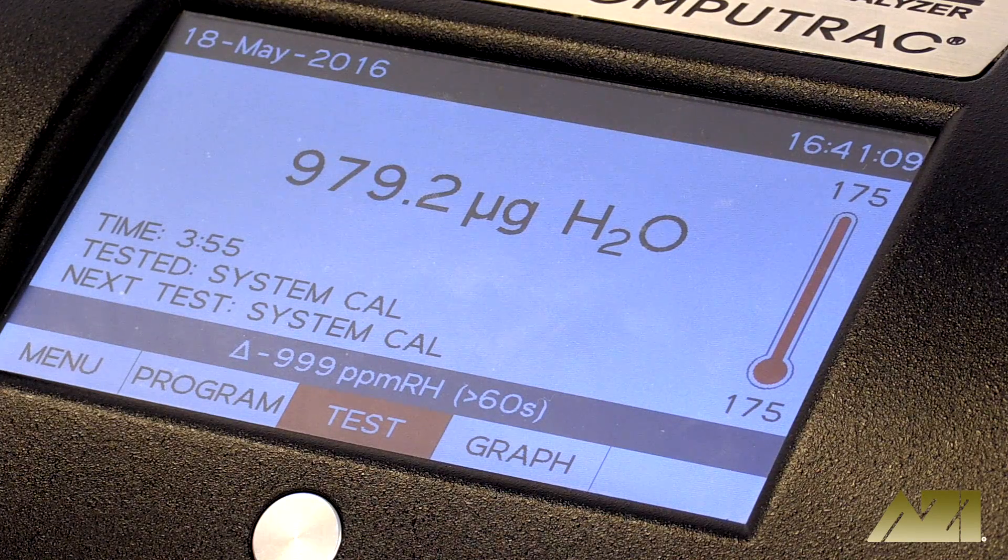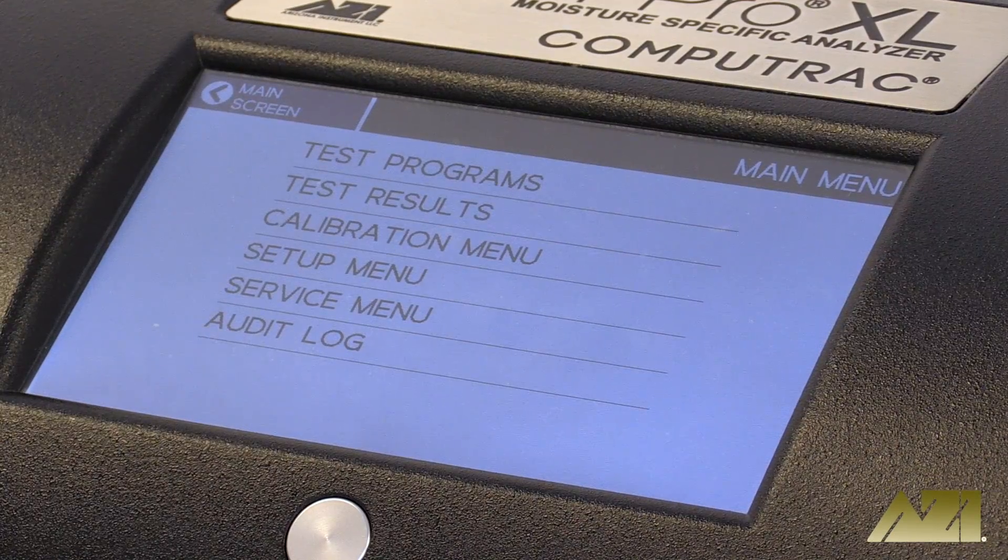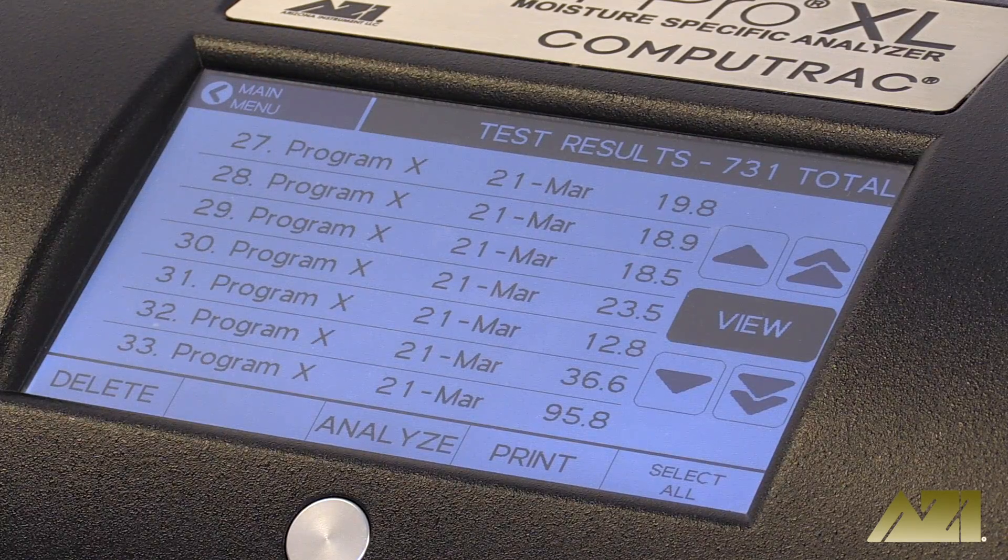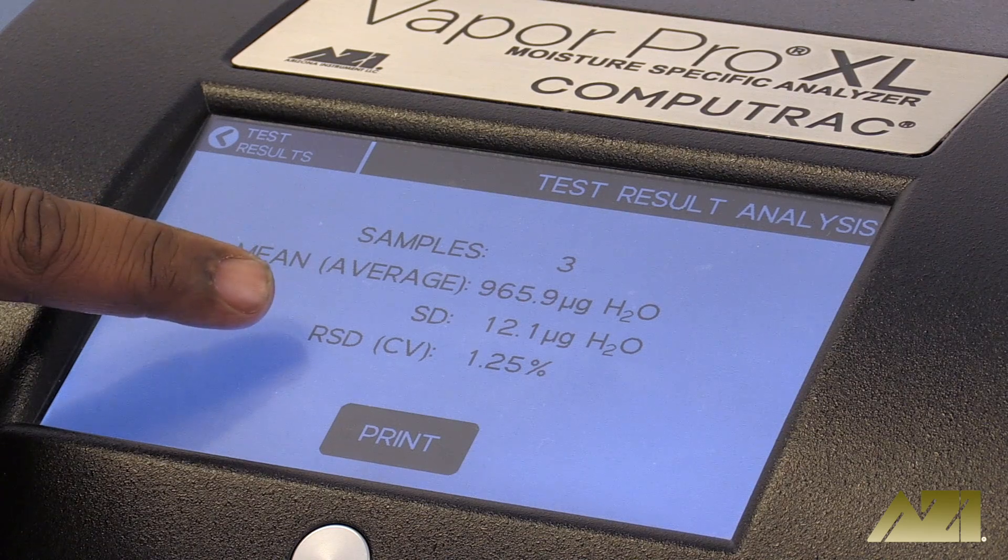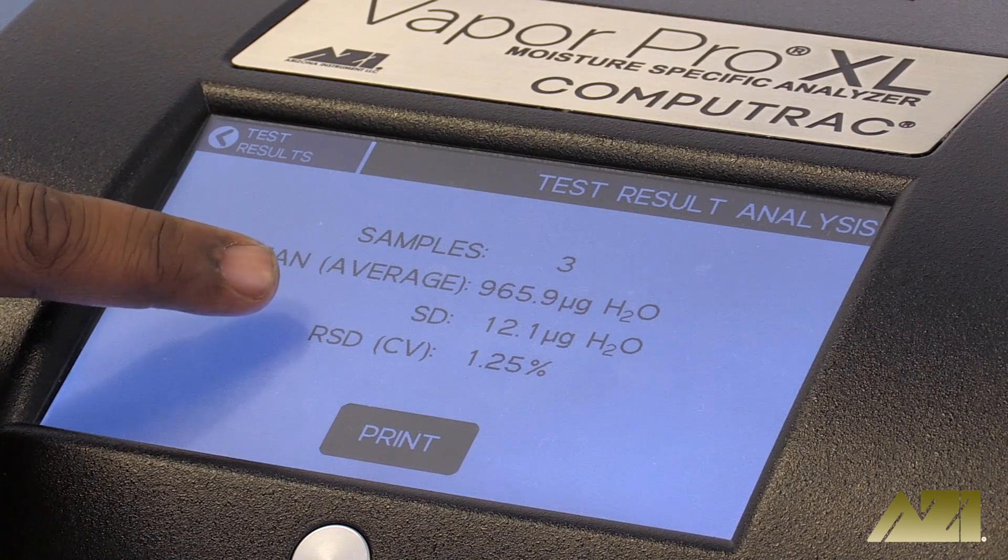Follow the on-screen prompts to perform the analysis. If the standard deviation is less than 50 and the coefficient of variation is less than 5, the instrument does not need to be recalibrated.